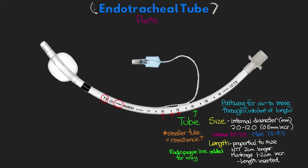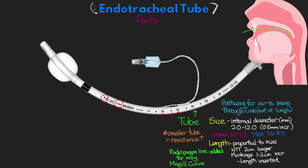ET tubes also have a curve called the McGill curve. Its introduction actually came about by accident, but it turned out to be quite helpful. The curve follows the anatomy of the upper airway and makes for easier insertion — the back of the curve follows the roof of the mouth down into the back of the airway.